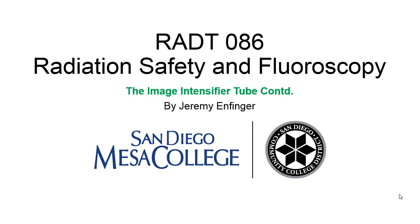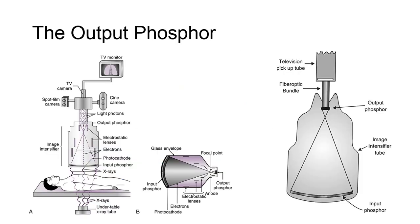Let's continue discussing the remaining components of the image intensifier tube. The output phosphor is also composed of cesium iodide, so when the electrons from the photocathode interact with it, their kinetic energy is transformed into visible light.